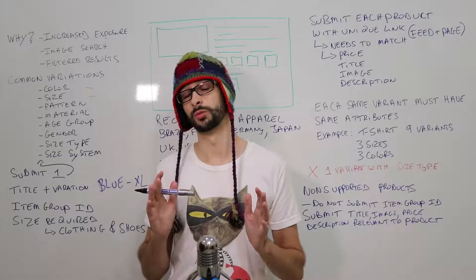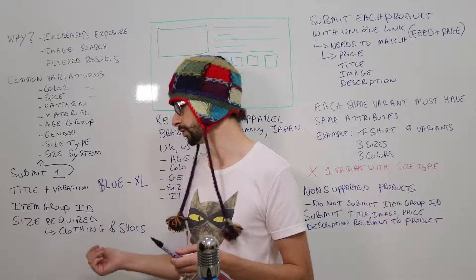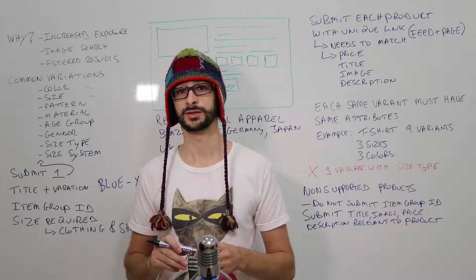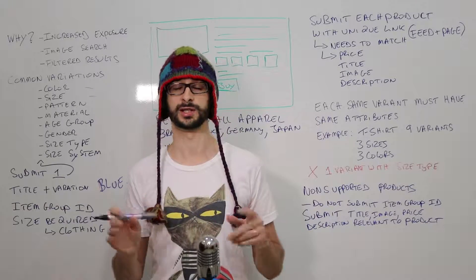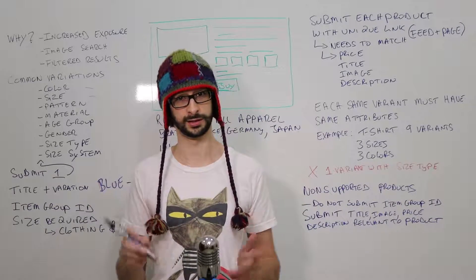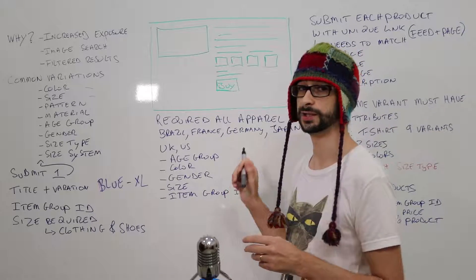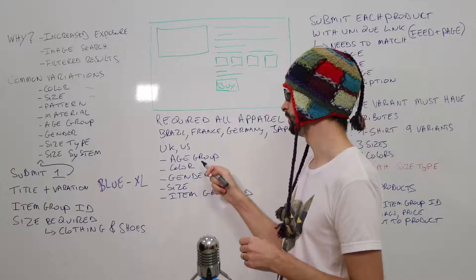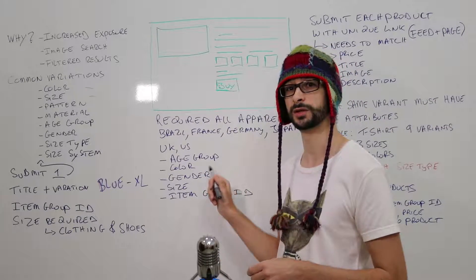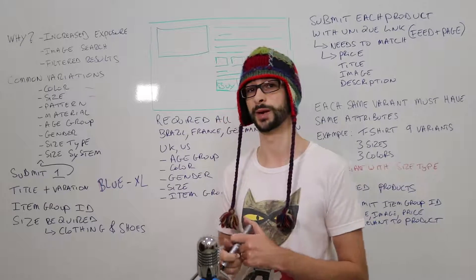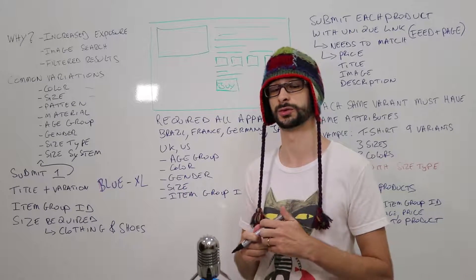There are additional requirements when submitting variants. Certain products are required — for example if you have shoes or clothing you need to submit the size. If you don't submit the size for those products, your product is not approved and you cannot submit it to Google Shopping. For specific countries — Brazil, France, Germany, Japan, UK, and US — you have to submit for the apparel category: the age group, the color, the gender, the size, and the item group ID. If you do not submit this, you will not be able to submit your products to Google Shopping.